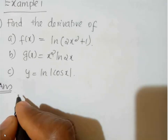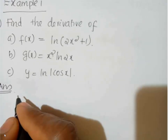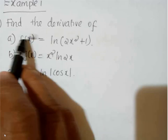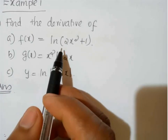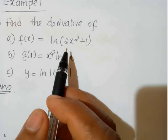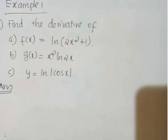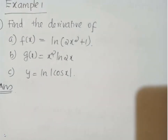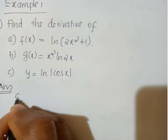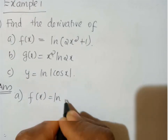Look at the example. The question is: find the derivative of f(x) = ln(2x² + 1); g(x) = x² log(2x); and the third question is y = log|cos x|. For the first question, f(x) = ln(2x² + 1).